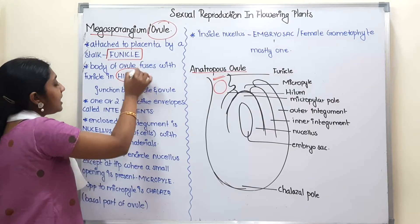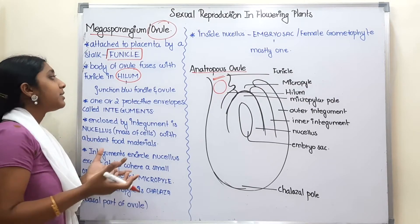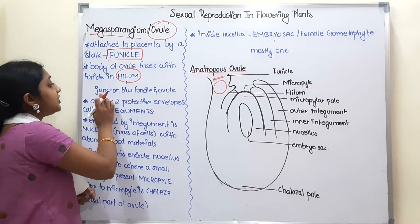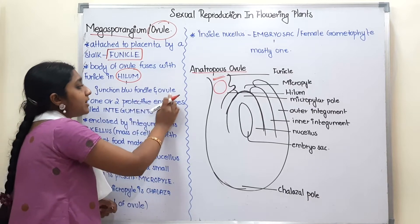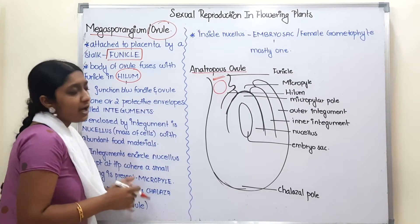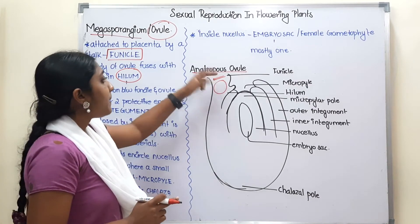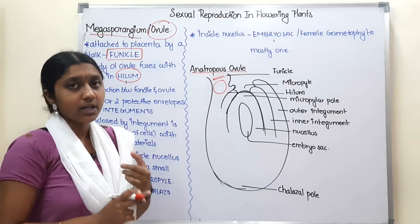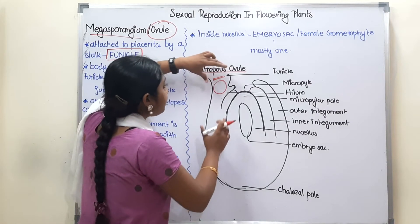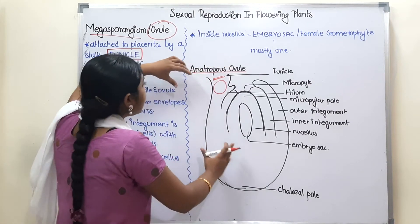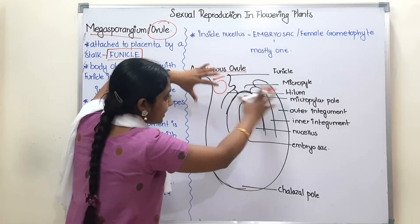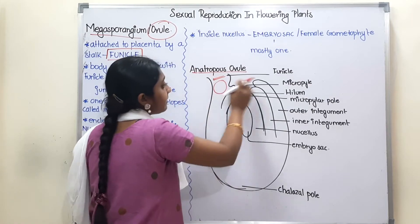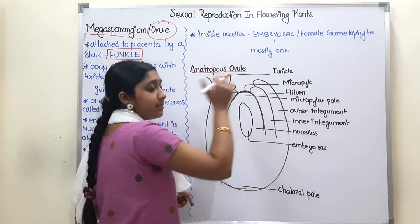What is the hilum? Hilum is nothing but the junction between the funicle and the ovule. The placenta attaches to the funicle, and in this ovule, the ovule body attaches — that junction is called the hilum.